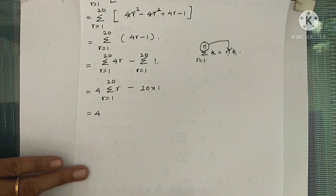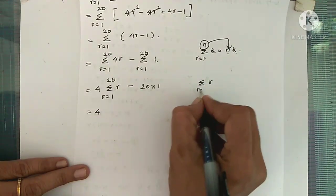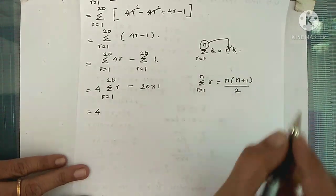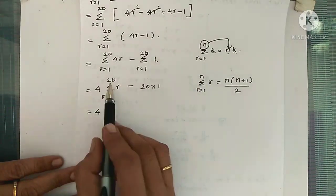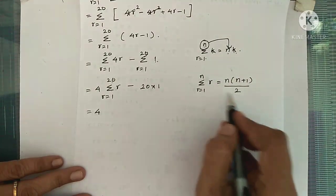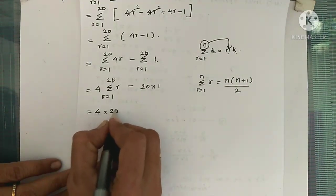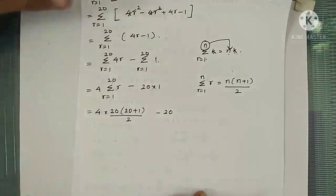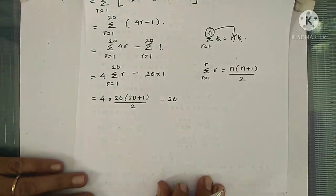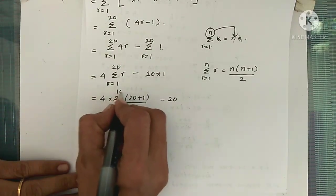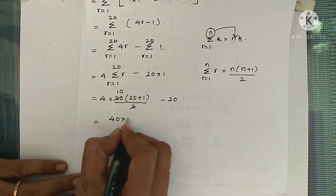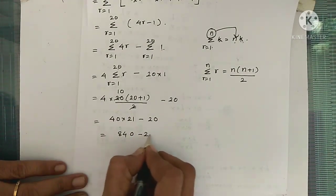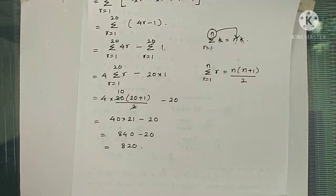Using the formula summation r from r=1 to n equals n(n+1)/2, with n=20: we get 4 × (20×21/2) minus 20 = 4 × 10 × 21 minus 20 = 840 minus 20 = 820.